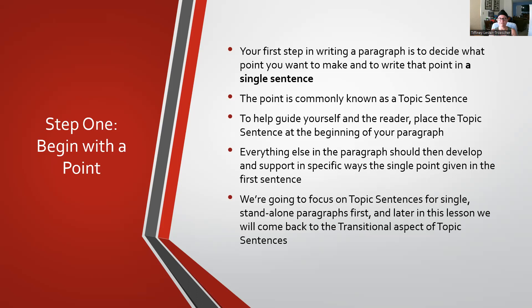We're going to focus right now on just a regular topic sentence for a standalone single paragraph, and then at the end of this lesson we'll come back to the transition part. We'll look at how we take a regular topic sentence — once we're familiar with those — and create a transitional topic sentence out of it. All it takes is adding the transition. You don't have to really change much at all. Once we get a good footing with simple topic sentences, it's easier to learn how to turn them into transitional topic sentences.